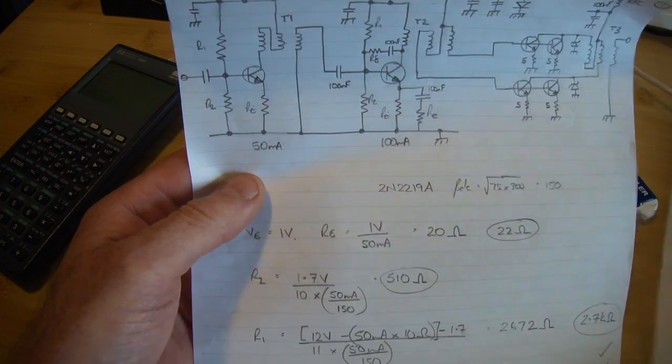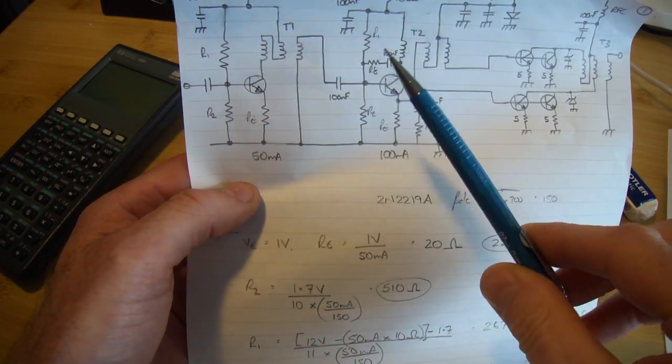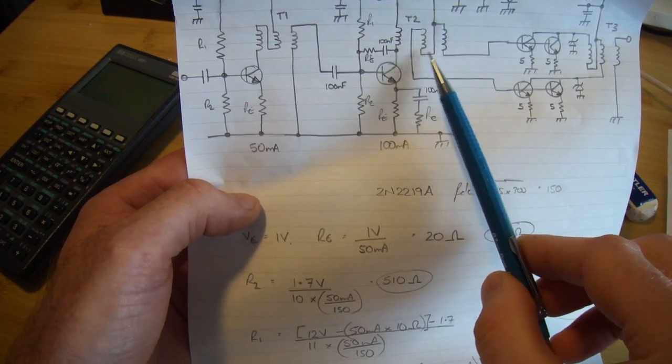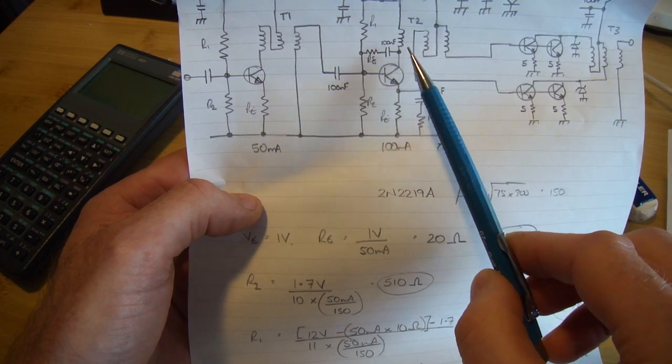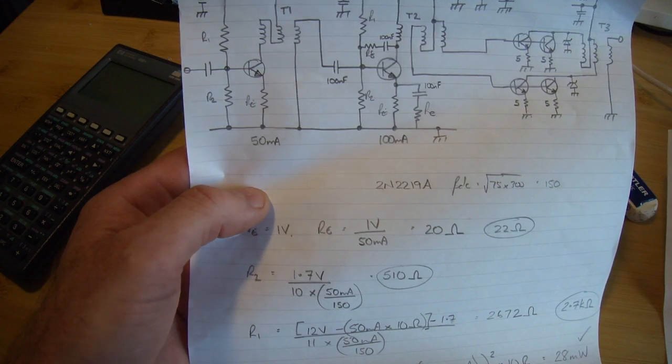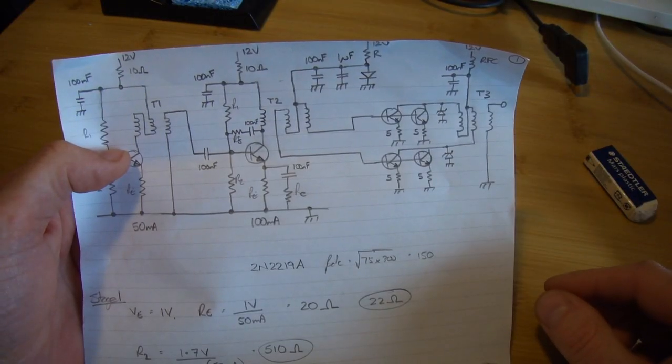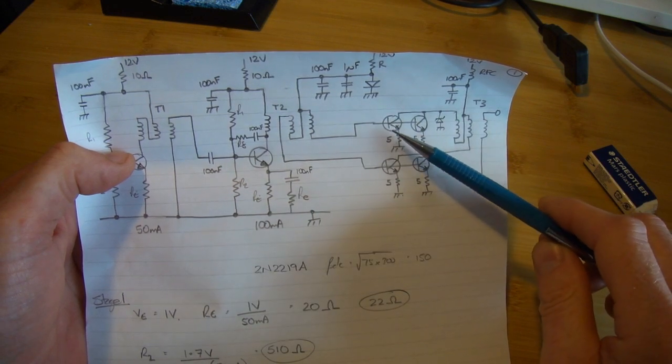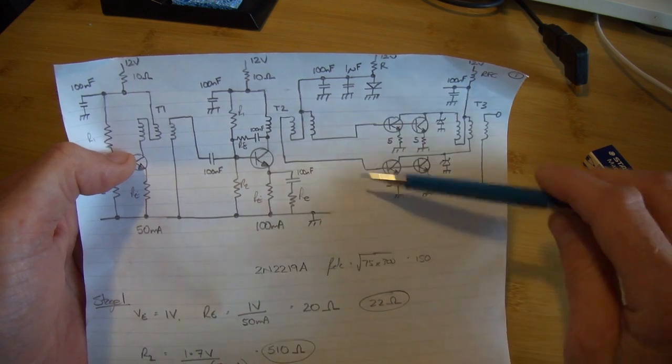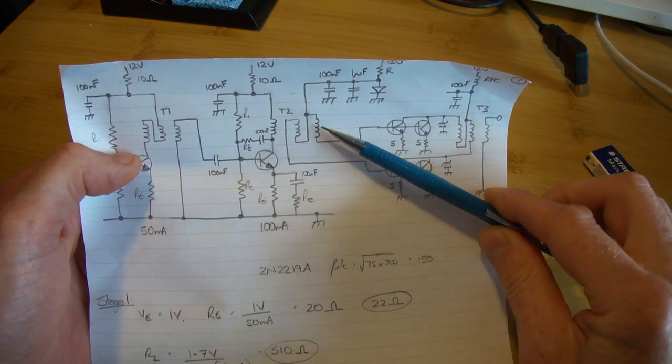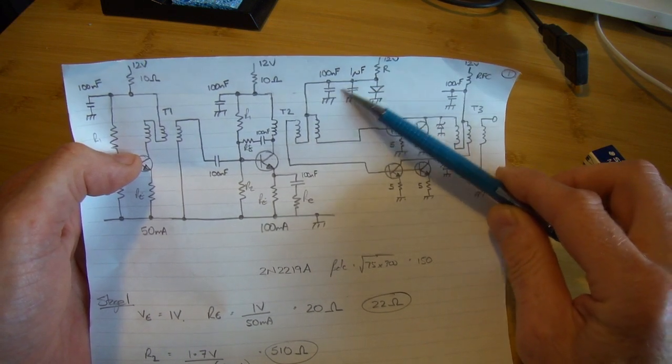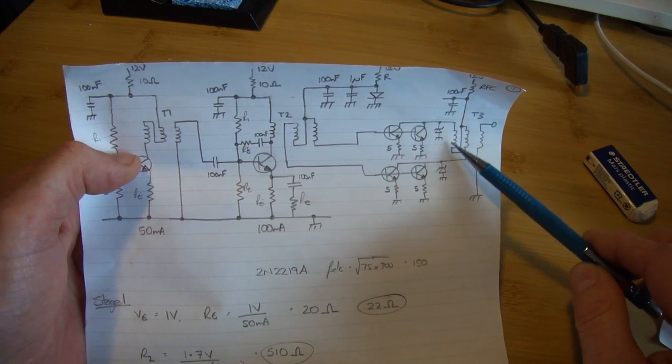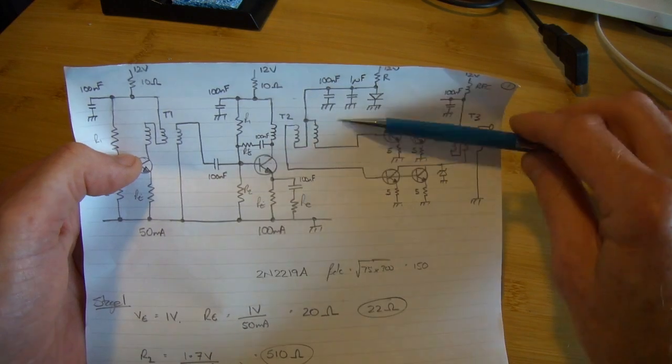So T2, that transformer here, that is going to be 10 turns on the primary and the secondary is going to be 3 turns bifilar. Again, in series, so that will turn out to be 10 over 6 for the impedance transformation there. So that takes us to the third stage, the final stage here, which is two sets of 2N2219As again, in parallel in a push-pull configuration. So because of the arrangement of our input transformer here, being Earth from an AC point of view, Earth at the center, then we get opposing voltages being generated here and then being reconstructed on our output transformer.